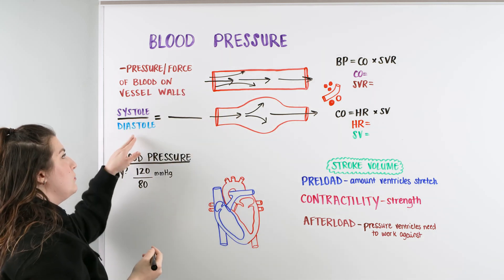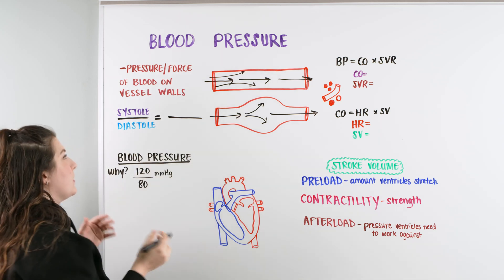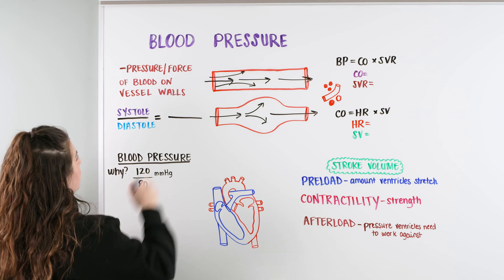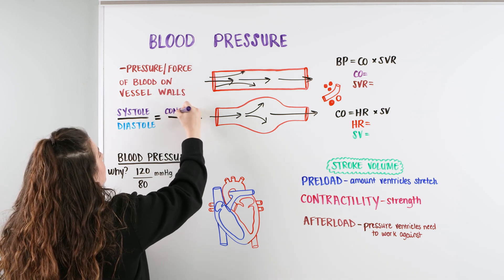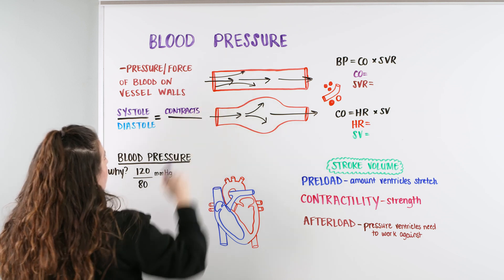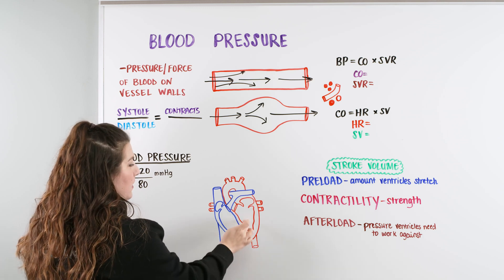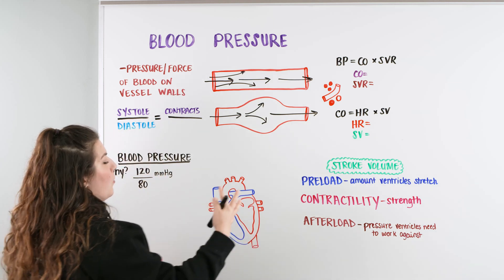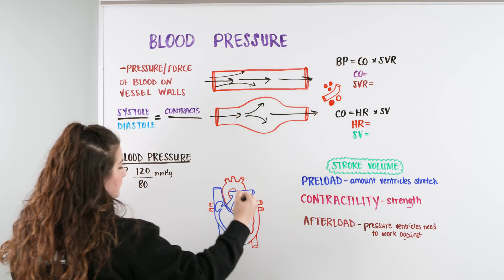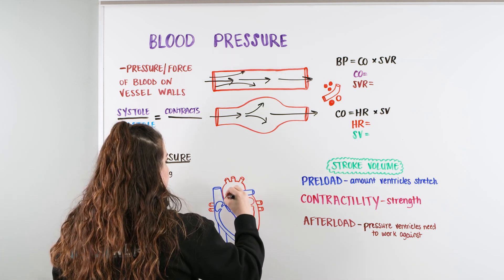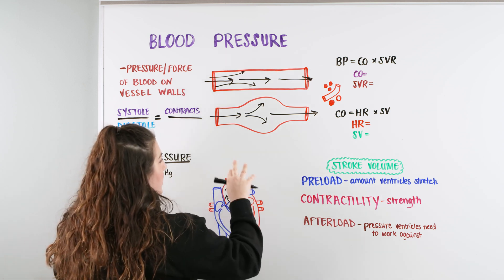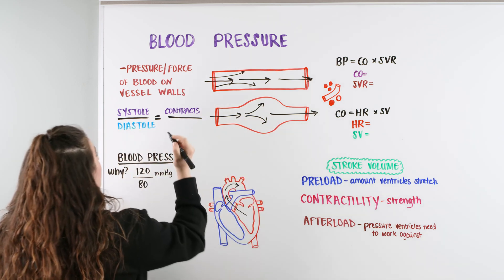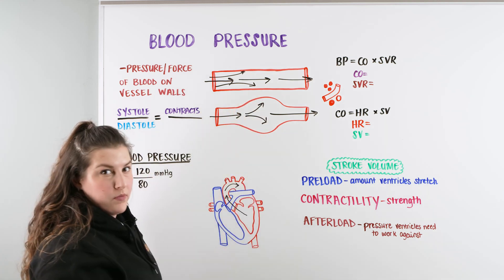With blood pressure, we know there are two numbers that we always talk about — one number on top and one number at the bottom. The first word we have here is systole. And what does the word systole correlate with in our heart? We know that that is when our heart is contracting. So when our heart contracts — specifically the left ventricle — it forces blood out. When it forces blood out through the aorta, we get that force of blood, and that force of blood causes this bulge. When there is that stretch or this bulge in the aorta, we get our first number. And that is our systolic number, right at the top of the blood pressure.